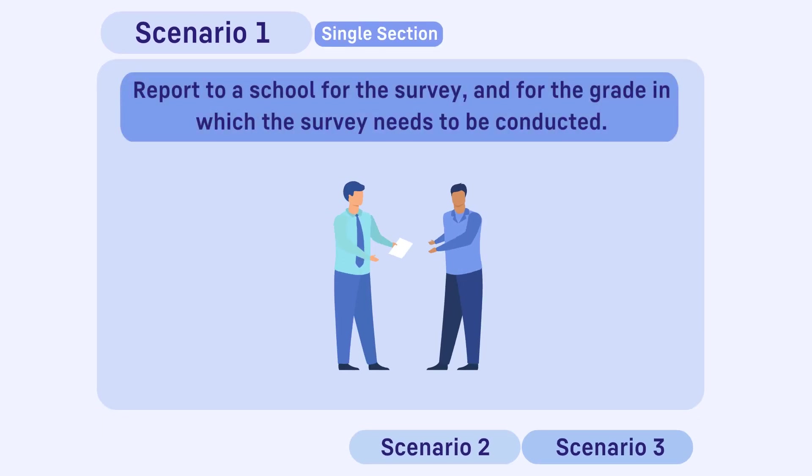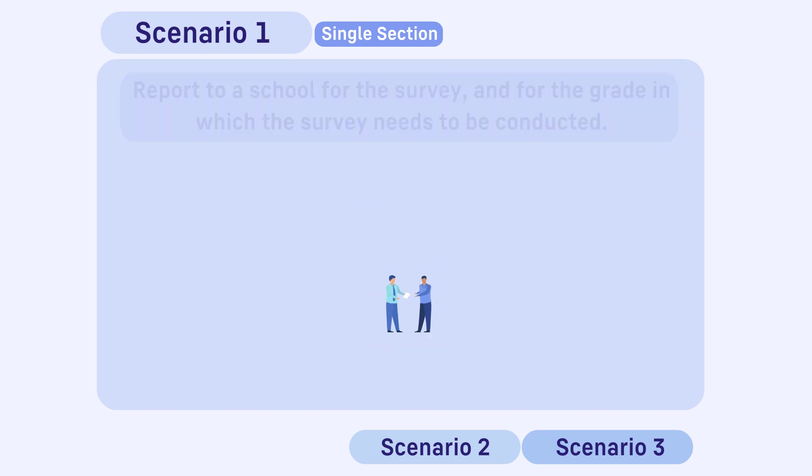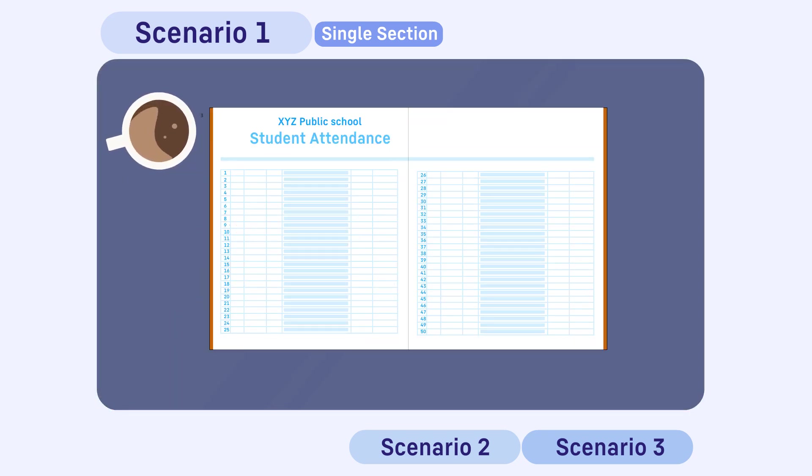Scenario 1: You report to a school for the survey, and for the grade in which the survey needs to be conducted, there is only a single section. For example, in XYZ public school for grade 3 survey, there is only one section, section A.